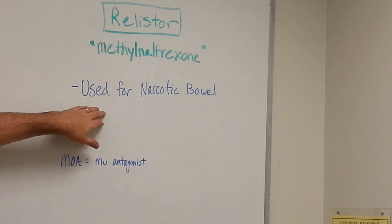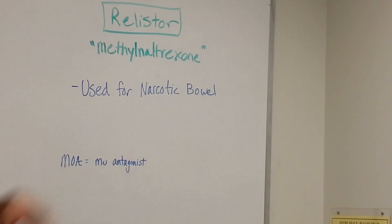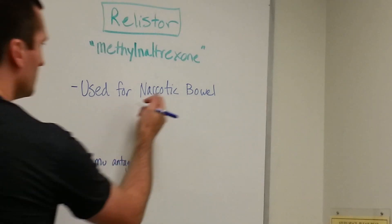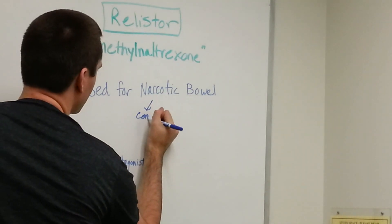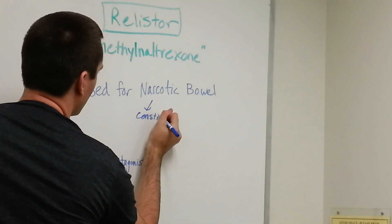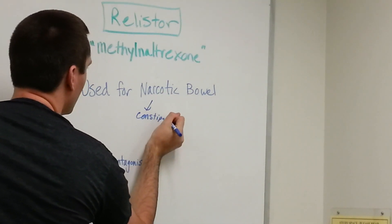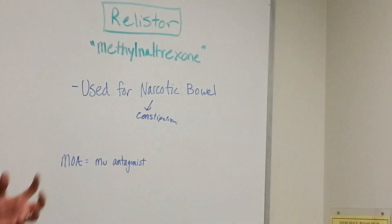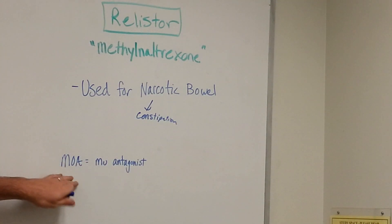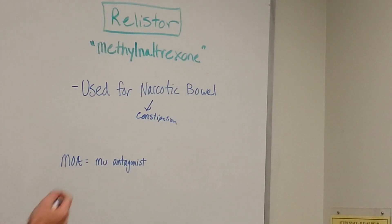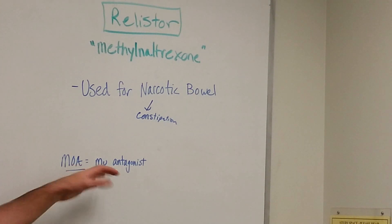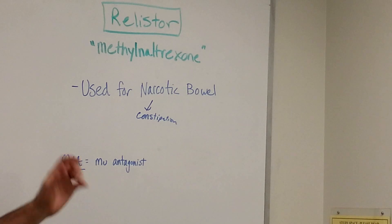So how does this work? It's used to treat narcotic bowel — constipation or pain caused by a lack of bowel movement. Its mechanism is going to be as a mu antagonist, which is a certain type of opioid antagonist.